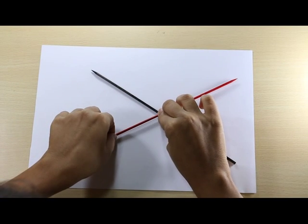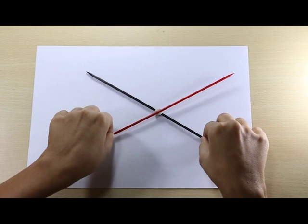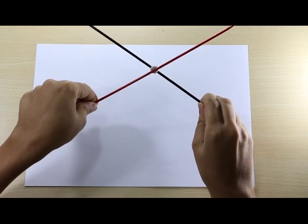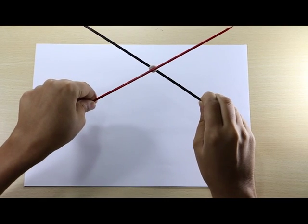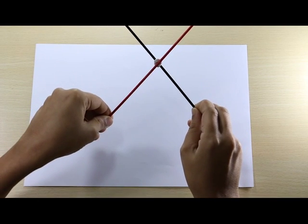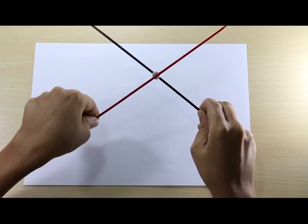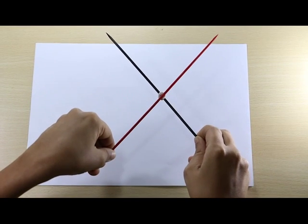Now, let's move these sticks a little bit and see what happens to them. As you can see, the angles on both sides change a little bit. The vertically opposite angles become larger and smaller along with each other.